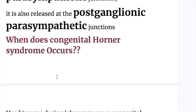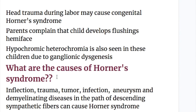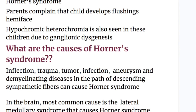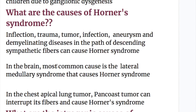Congenital Horner's syndrome can occur when head trauma during labor damages the sympathetic pathway. Parents may complain that the child develops flushing of one half of the face. There is hypochromic heterochromia in these children due to ganglionic dysgenesis.